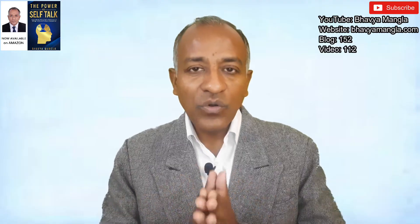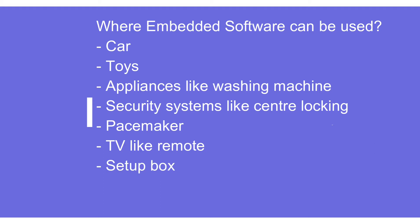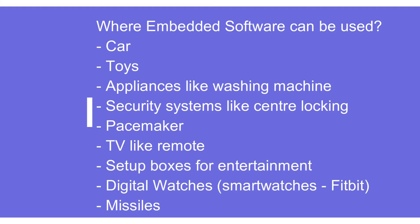Looking at how embedded software is used in industry, it is found in many different processes and products — cars, toys, appliances like washing machines, security systems like central locking, pacemakers that save our lives, TVs, remote setup boxes for entertainment, digital watches, missiles, and more. You can think about almost anything and you will find embedded software in it.